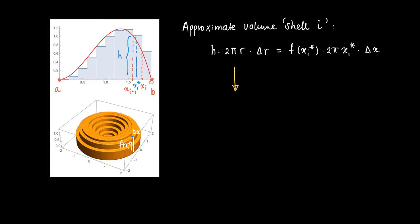That's just one shell, shell i. We sum over all n shells, so the approximate volume of the solid is given by the sum over those volumes.